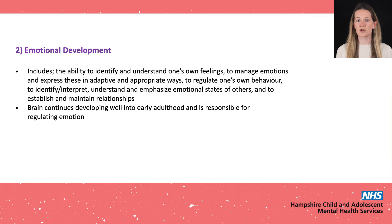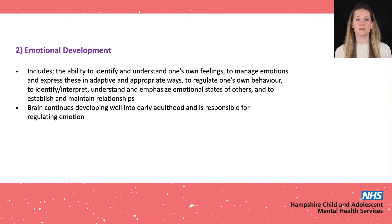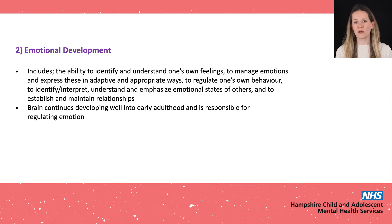Secondly, we'll consider emotional development. Aspects include the ability to identify and understand one's own feelings, to manage and express emotions in adaptive and appropriate ways, to regulate one's own behaviour, to identify, interpret, understand and empathise with the emotional states of other people, and to establish and maintain relationships. The brain is the most complex organ and continues developing well into early adulthood. Areas such as the prefrontal cortex, responsible for assessing risk, planning ahead and regulating emotion, are still developing in the teenage years.